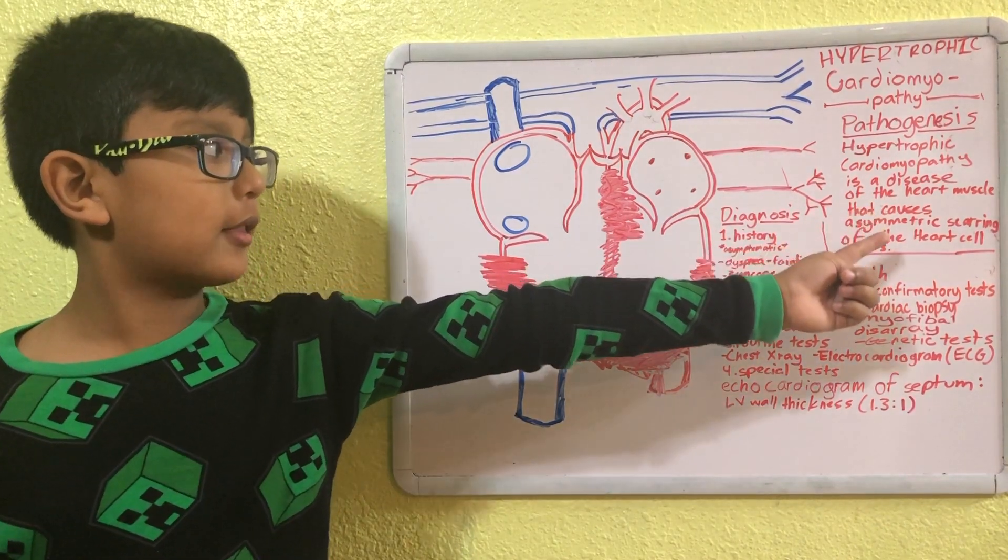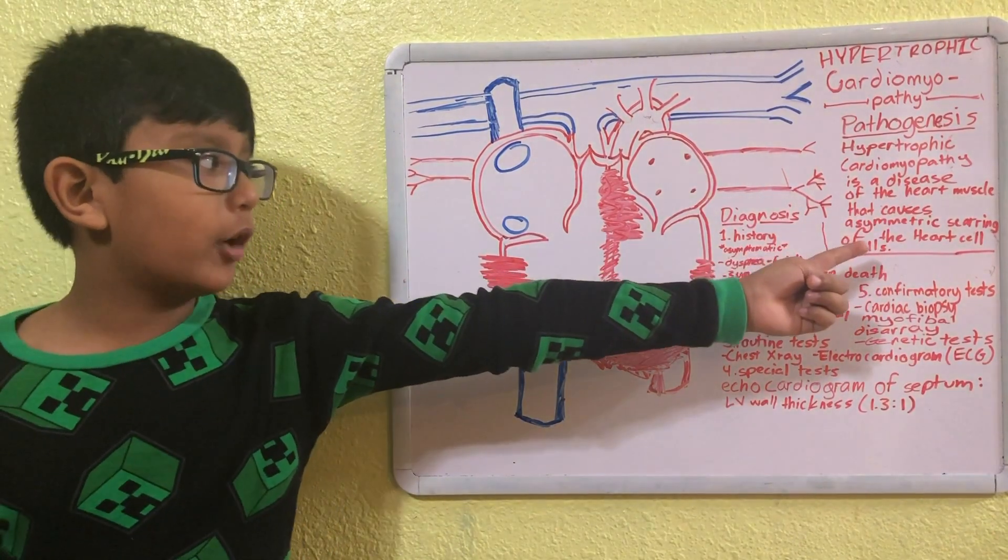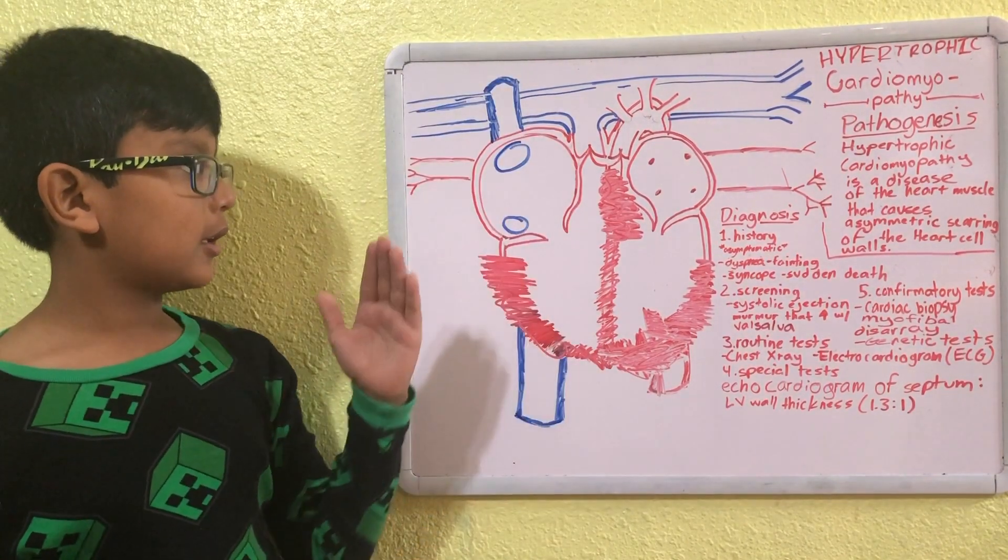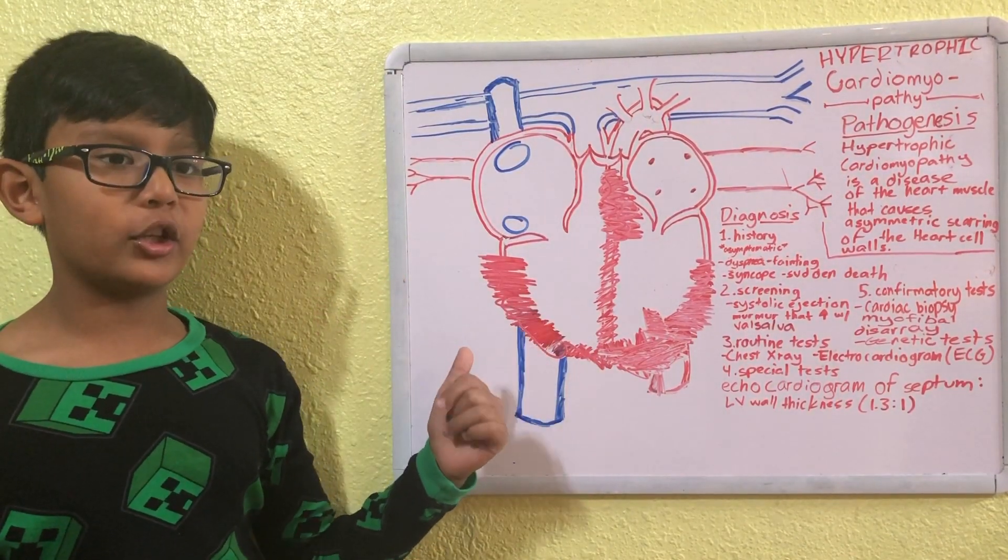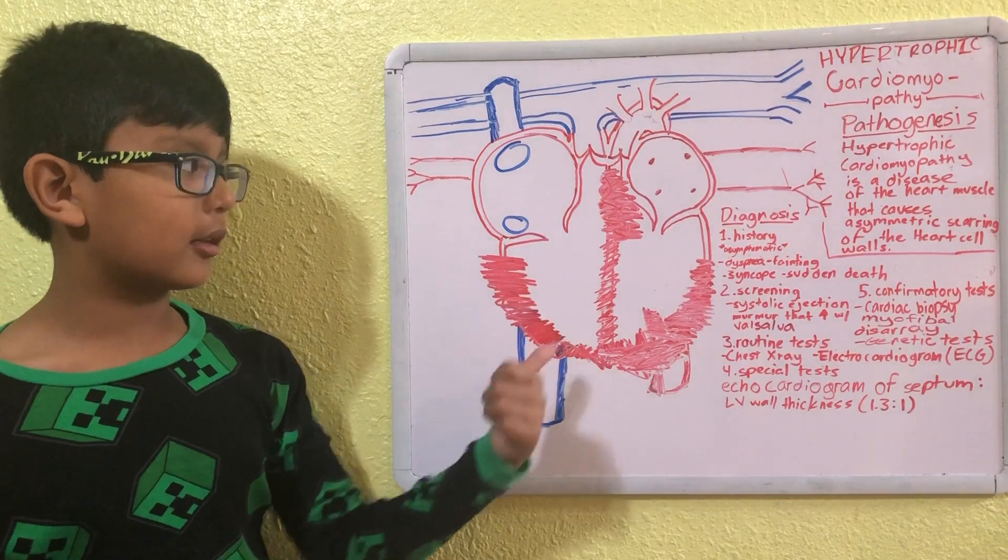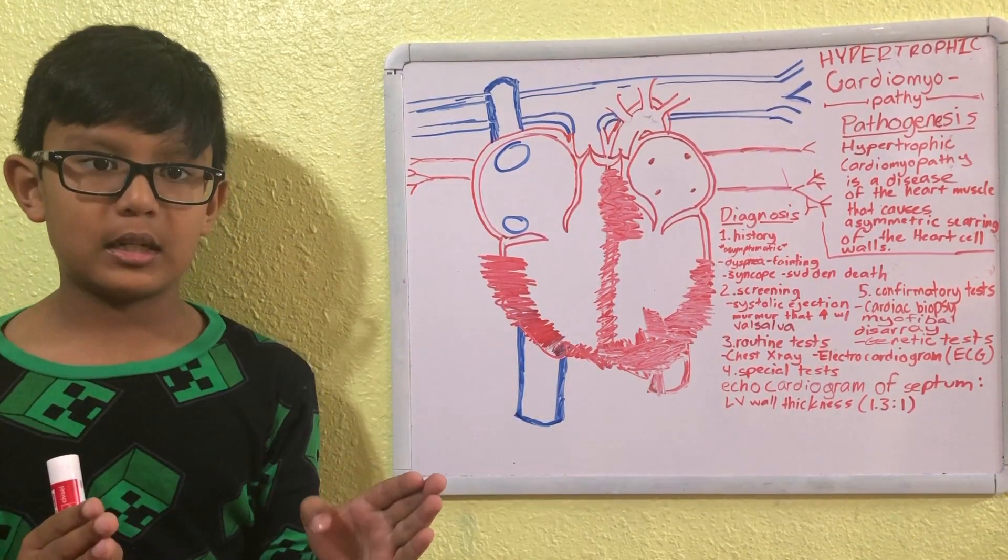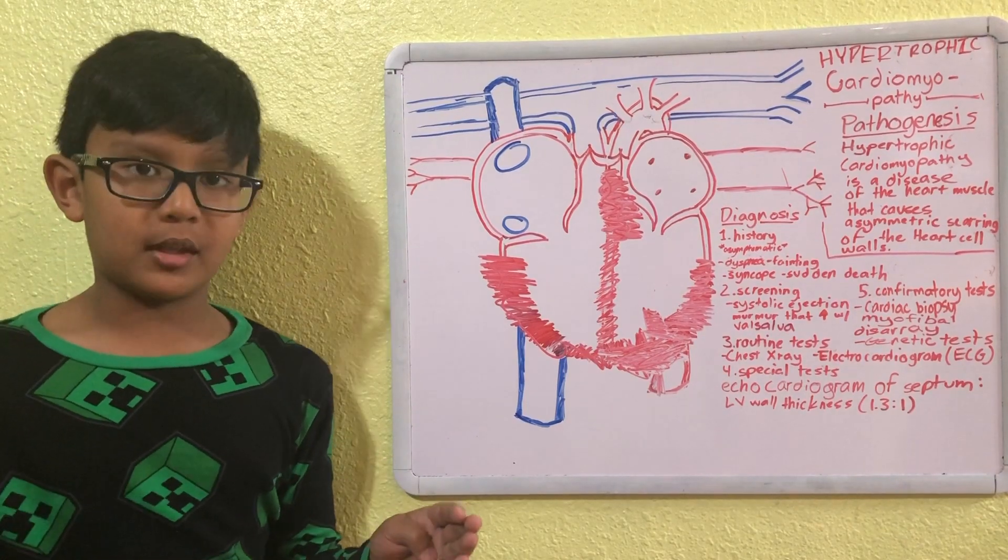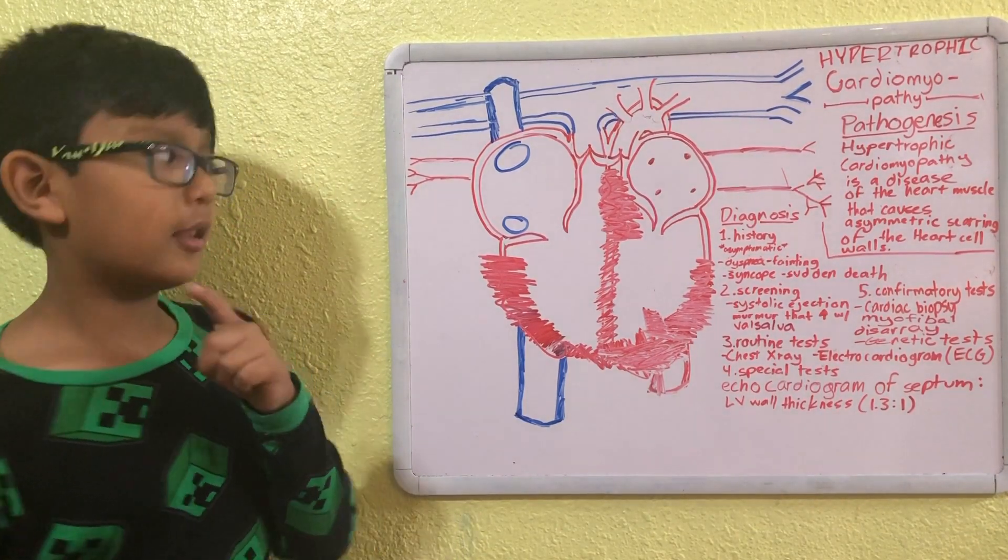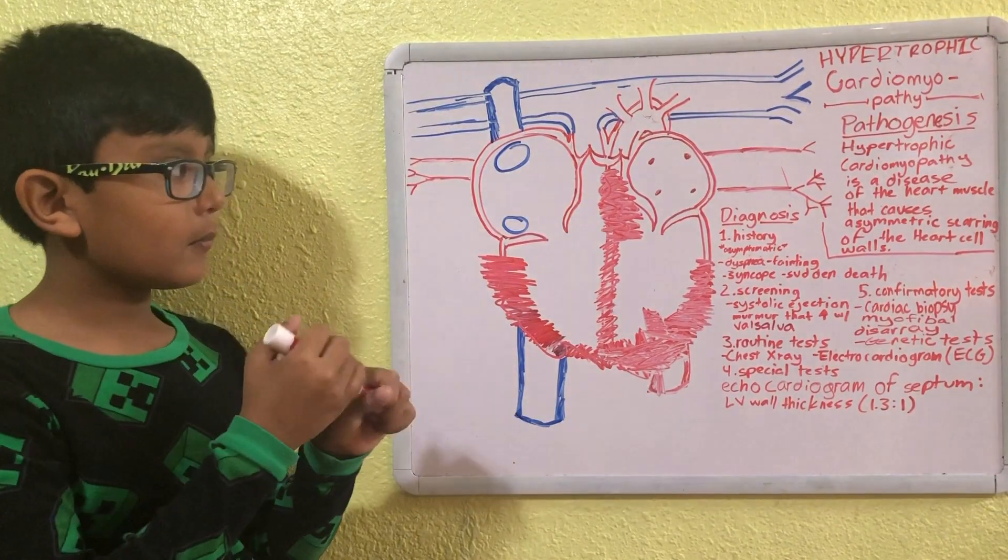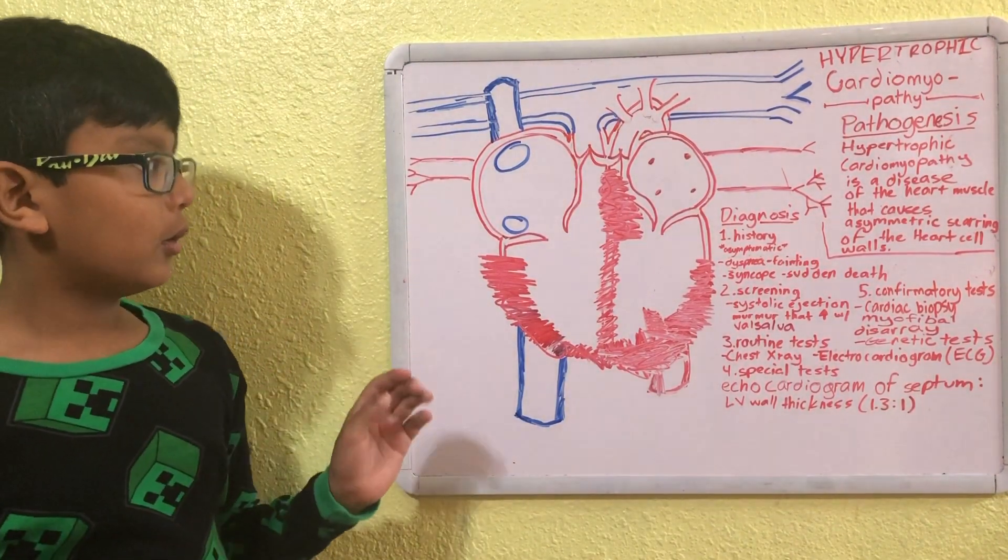of the heart muscle that causes asymmetric scarring of the heart cell walls. So here I've drawn in a heart, and it's not looking very good—it has asymmetric scarring. Now, asymmetric: think of the word symmetric, and then think of the opposite of that word. That means it's not really in a mirror image. So moving on, we're gonna